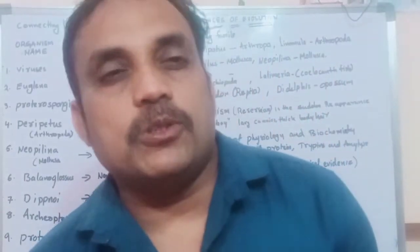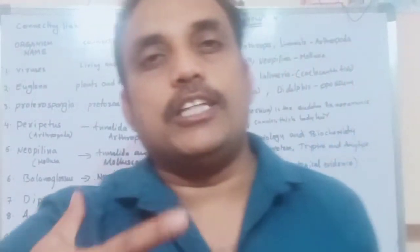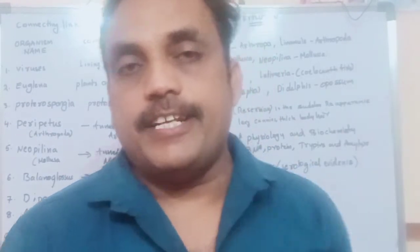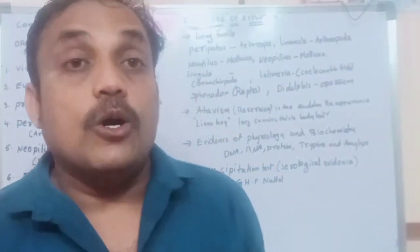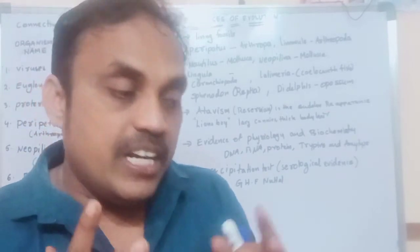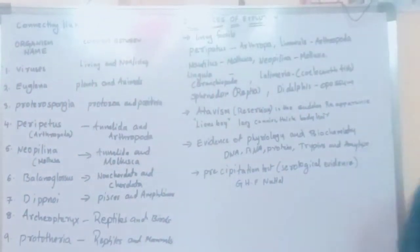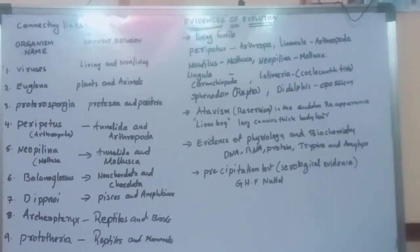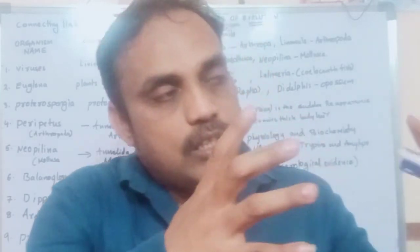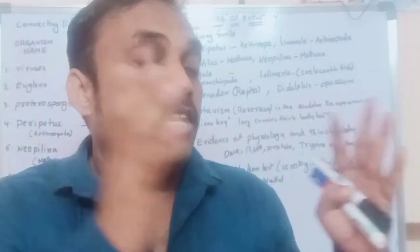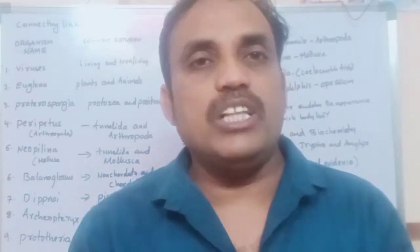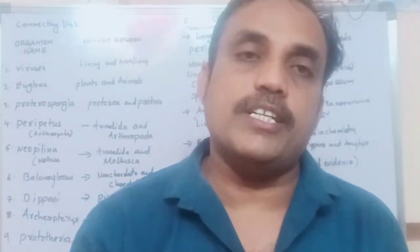We are going to discuss the evidences of evolution — how evolution occurs and what evidences scientists have collected. We already learned about embryology evidences, paleontology evidences, homologous organs, analogous organs, biogeographical evidences of evolution, and vestigial organs. These are all proofs or evidences of evolution. Now we are going to discuss some more evidences of evolution today.